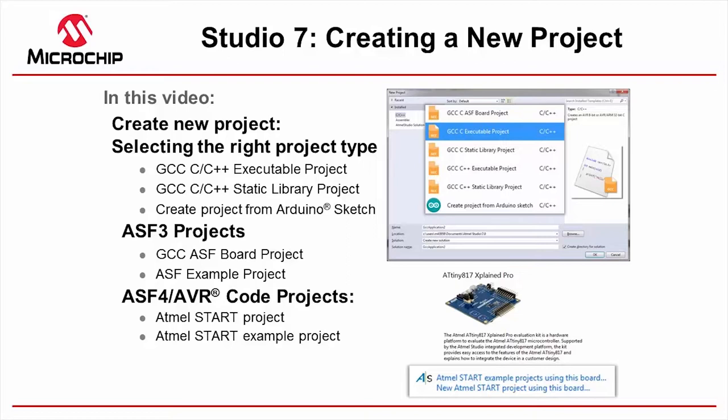In this video we're going to show you the various options of creating a new project in Studio 7, going through the various options in the standard new project dialogue, also talking through ASF3 projects and the create new ASF example project, then looking at ASF4 and START project. Note that the code that START generates for SAM is ASF4, which is distinct from what we see in ASF3.